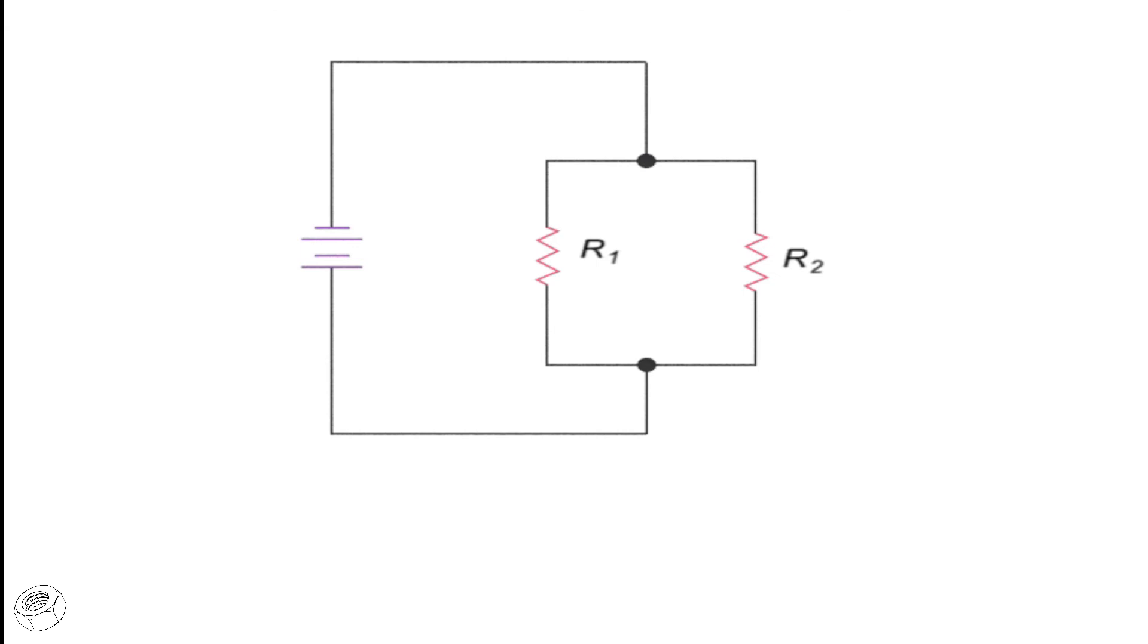Calculating the total resistance of resistors in a parallel circuit requires the use of the product over sum equation. In this parallel circuit, if R1 is 50 and R2 is 80, then the combined or equivalent resistance of the two resistors would be 50 times 80, or 4000 divided by 130, which is 30.7 ohms.